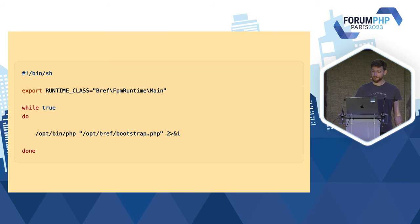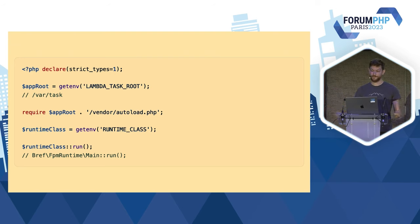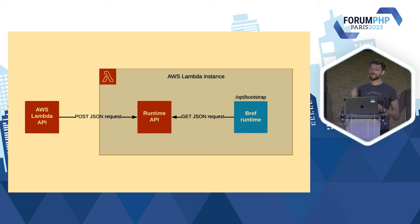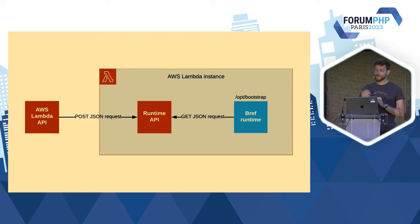Que fait ce fichier bootstrap.php ? Il vient grosso modo require votre autoloader — parce que vous avez installé Bref dans votre projet avec Composer — et vient lancer la classe FPM runtime de Bref. Il y a plusieurs runtimes dans Bref : la FPM runtime, c'est celle pour les applications HTTP. Le processus Bref, une fois qu'il a démarré, vient se connecter à la runtime API, le binaire Go, qui a cette petite API en local. Et il vient lui dire : je suis prêt, donne-moi le JSON de la requête que je puisse lancer le script.